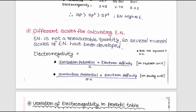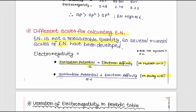Different scales are used for calculating electronegativity. Electronegativity is not a directly measurable quantity, so several numerical scales have been developed. On the Mulliken scale: electronegativity = (ionization potential + electron affinity) / 2. On the Pauling scale: electronegativity = (ionization potential + electron affinity) / 5.6.